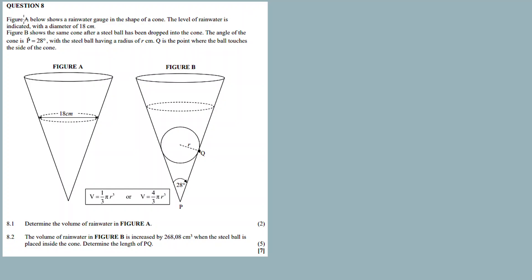Figure A below shows a rainwater gauge in the shape of a cone. The level of rainwater is indicated with a diameter of 18 centimeters. Figure B shows the same cone after a steel ball has been dropped into it. The angle of the cone is bisected on an island with the steel ball having a radius r centimeters. Q is the point where the ball touches the side of the cone.